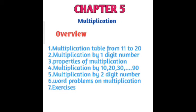Today we are going to start a new chapter — Chapter 5, which is about multiplication. The first topic you have learned is the multiplication table from 11 to 20. In your previous class you learned the multiplication table from 1 to 10. You have also learned how to do multiplication of 3 and 4 digit numbers by a one digit number, and some properties of multiplication.